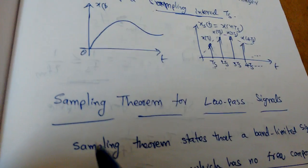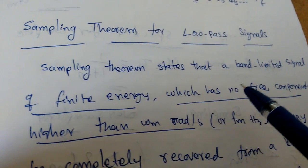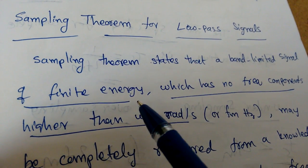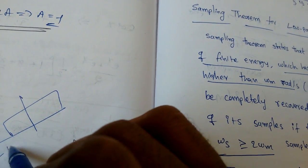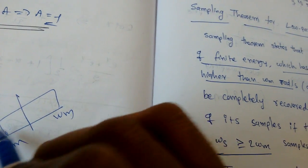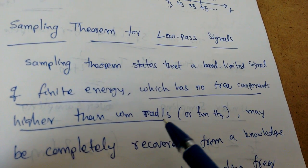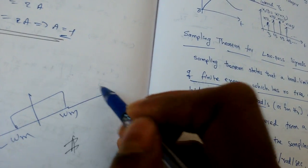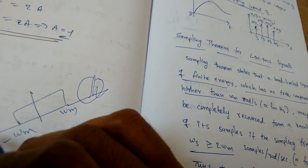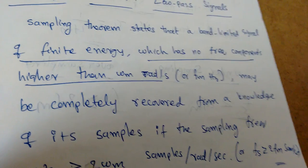Now, what do we mean by the sampling theorem? It is generally stated for low pass signals. The sampling theorem states that a band-limited signal of finite energy — band-limited means it is limited to between minus omega_m and omega_m — has no frequency components higher than omega_m radians per second, or fm Hz. After this there are no frequency components; only up to omega_m do we get frequency components. Such a signal may be completely recovered from a knowledge of its samples.